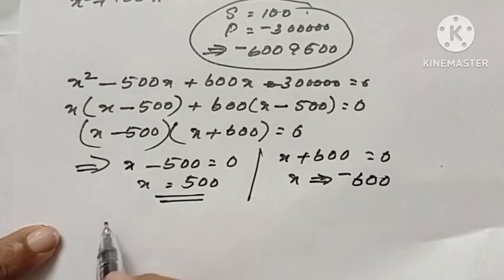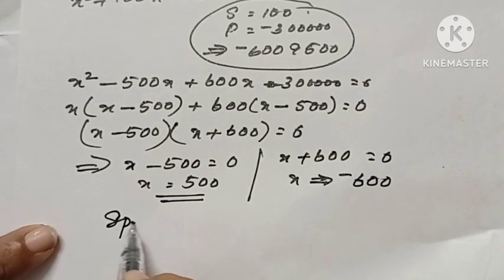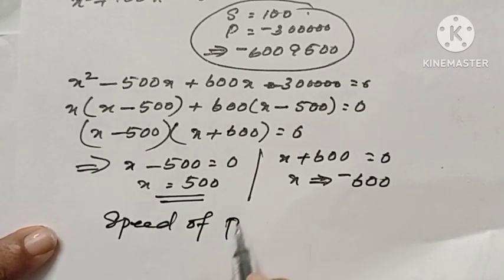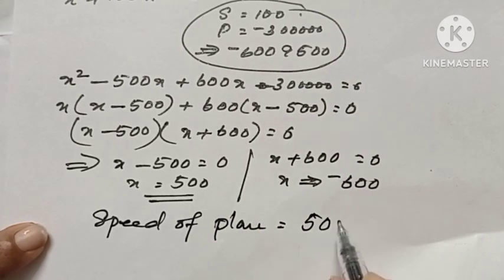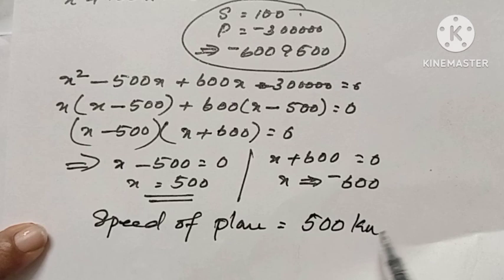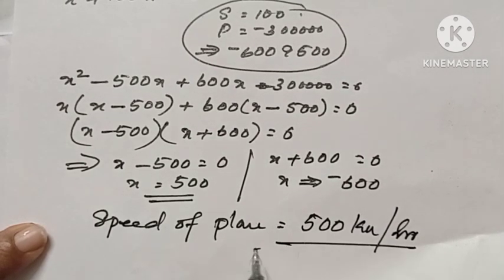We got two values for x, but we are not taking negative sign for speed. Therefore, speed of the plane equal to 500 km per hour.